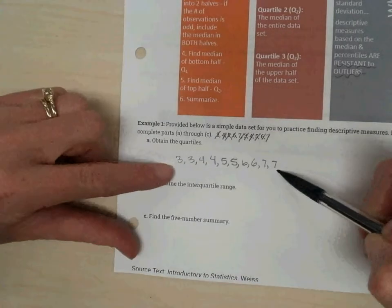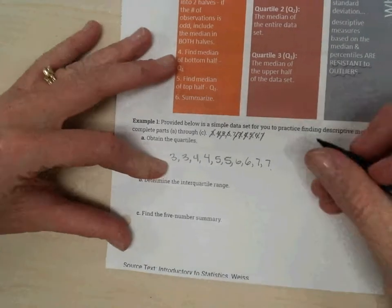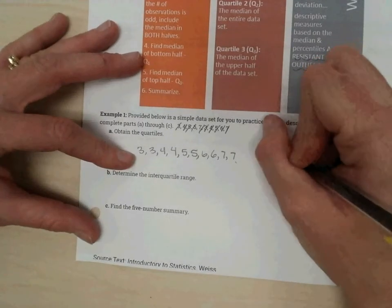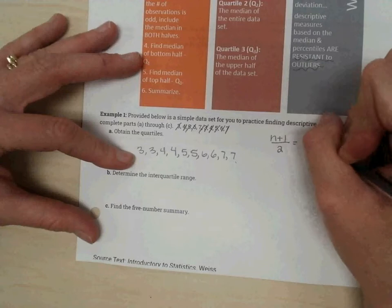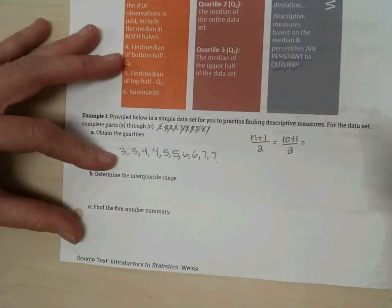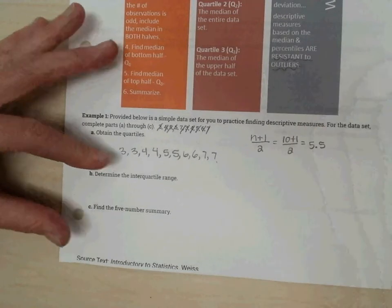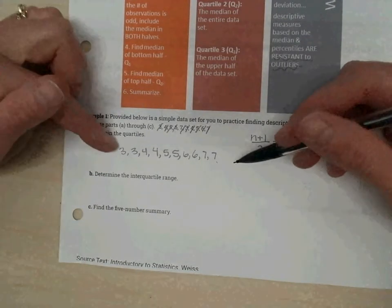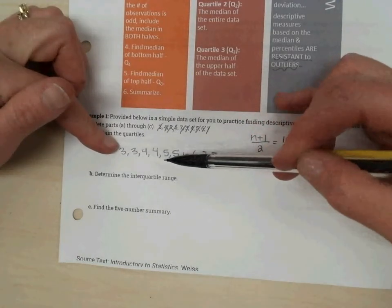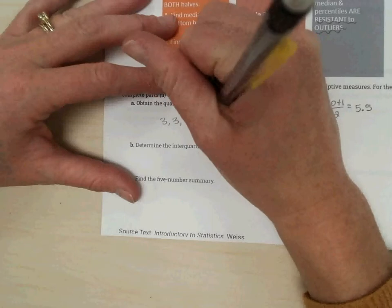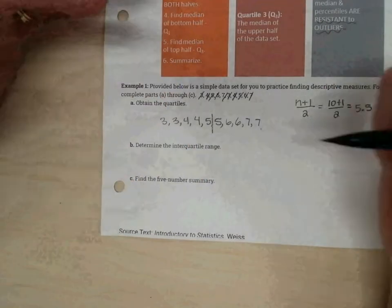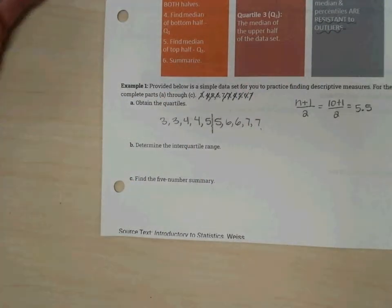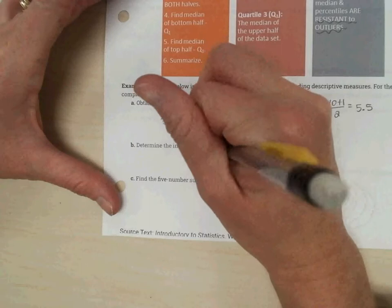Step two is to find the median of the entire data set. So we have 10 values. We'll use our position formula for the median. 5.5, so that means halfway between the fifth and the sixth value is our median. So in this case, it's right between the two fives. We average the fives and we get five.